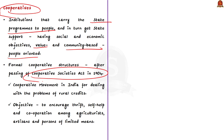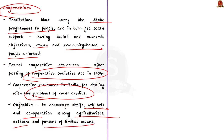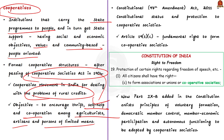The cooperative movement in India was primarily started to deal with problems of rural credit. This movement wanted to encourage self-help and cooperation among agriculturalists, artisans, and people of limited means. The cooperative societies were given constitutional status and protection by the 97th Constitutional Amendment Act, passed in 2011. This amendment made the right to form a cooperative society a fundamental right under Article 19(1)(c).